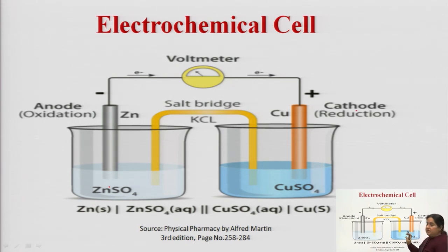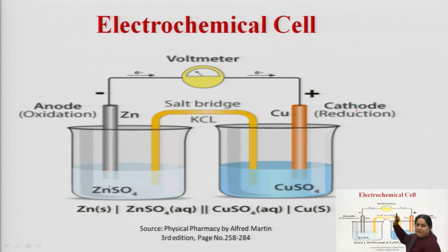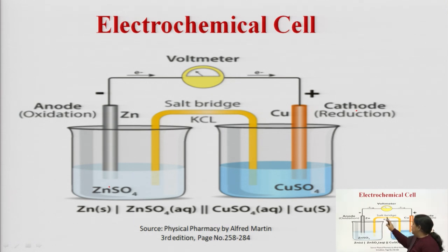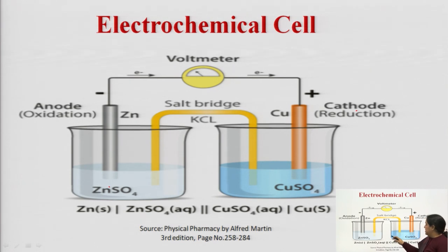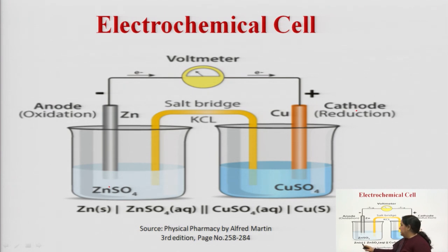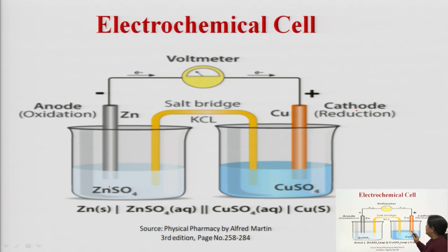Both electrodes are joined to each other by a voltmeter, and the cell is completed with the help of a salt bridge which acts as a bridge between the two beakers. KCl is filled in this tube — the salt bridge — and it completes the connection for the whole cell. The cell reaction can be written as: Zn(s) | ZnSO₄(aq) || CuSO₄(aq) | Cu.